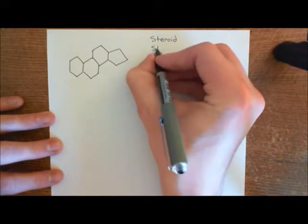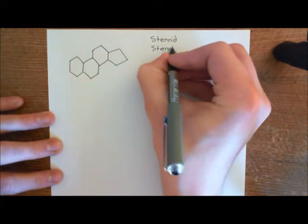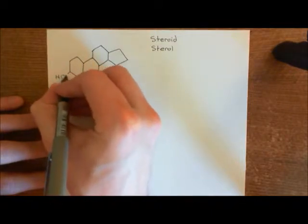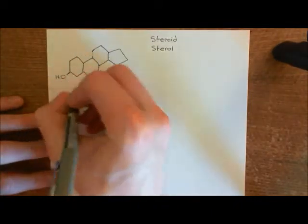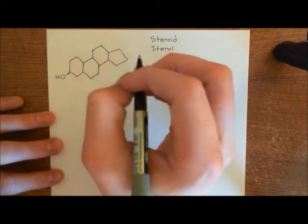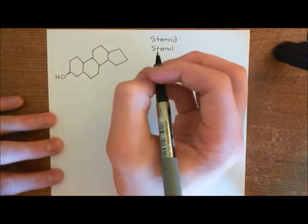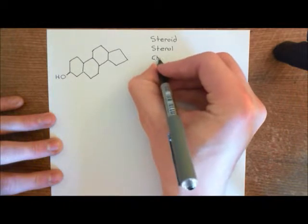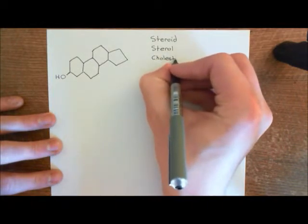A sterol is a steroid which has got an alcohol group down here. So that is the sterol structure. Now, cholesterol and ergosterol are going to be examples of sterols. Let's take this structure and now modify it into cholesterol.